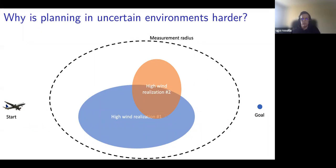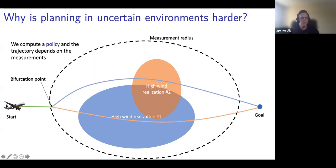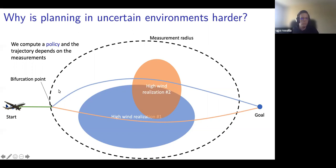So what we discussed last time is that in this situation we want to plan a policy — we can but should not plan a single trajectory. In particular, we first want to take what is called an information-gathering action: we drive our system to a state from which we can measure the state of the environment. We simply want to enter this ellipse, and then depending on the observation, change the trajectory we follow to reach our destination.